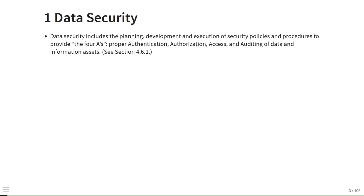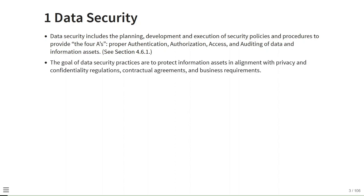Data security includes the planning, development and execution of security policies and procedures to provide the four A's: proper authentication, authorization, access and auditing of data and information assets. The goal of data security practices is to protect information assets in alignment with privacy and confidentiality regulations, contractual agreements and business requirements.